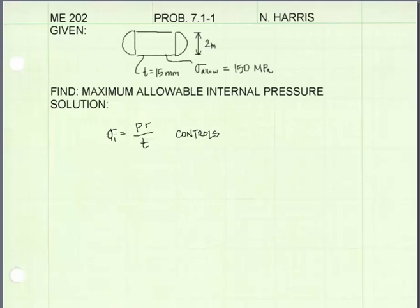And the equation for hoop stress, sigma1, is equal to PR over T. I've rewritten the equation to solve for P internal pressure.